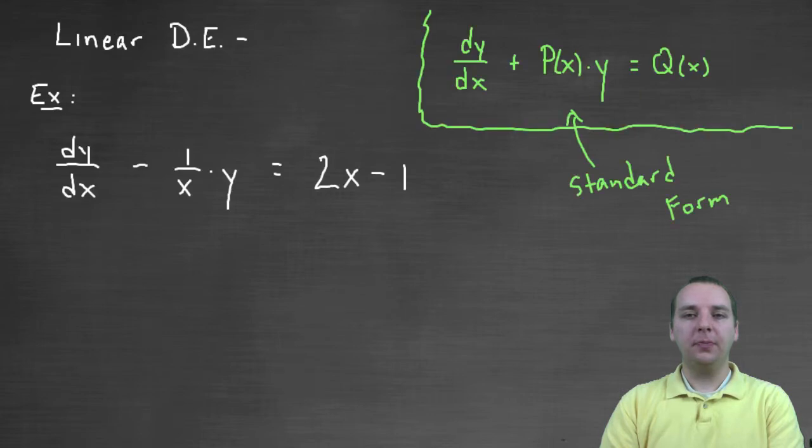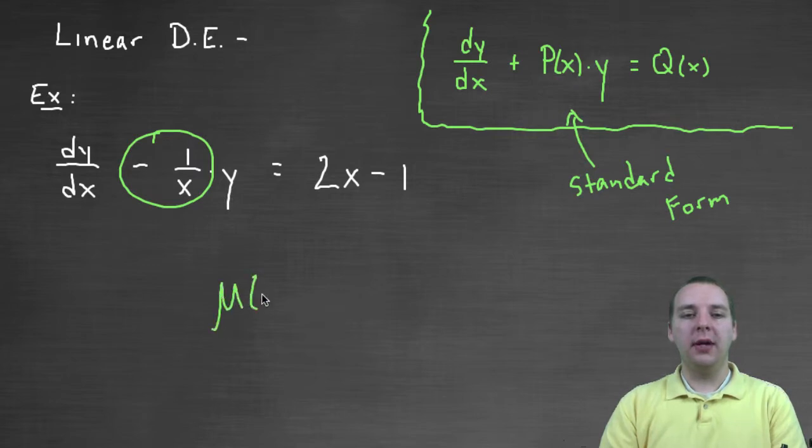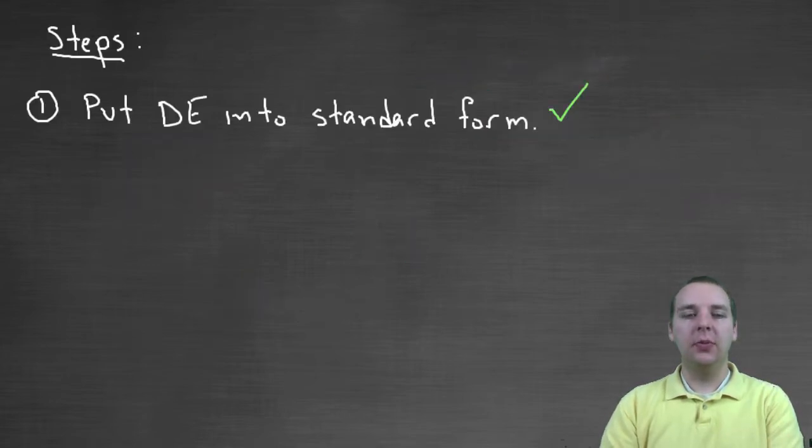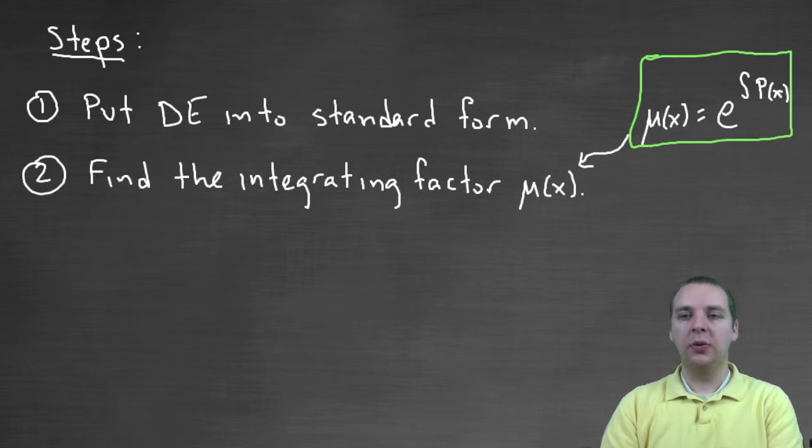So like in our example, our p(x) is negative one over x. So our μ(x) for this problem would be e to the integral of negative one over x. And we'll do that in a minute, just not at this moment in time. It's coming up shortly.